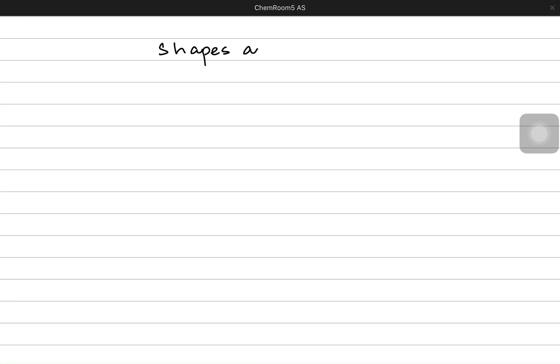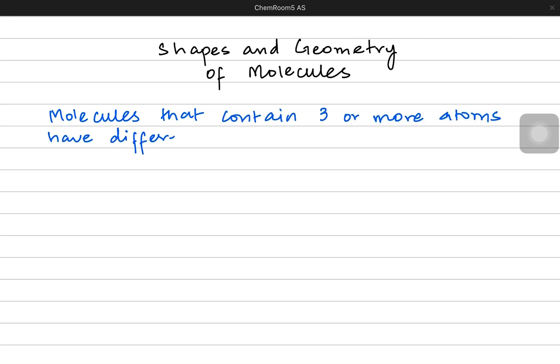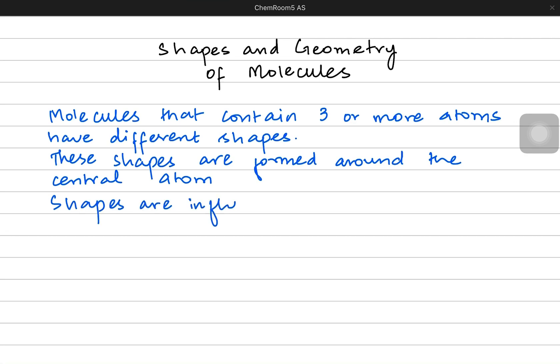Now let's move to another topic of AS level chemistry within the same chapter, that is the shapes and geometry of molecules. We're going to be talking about simple covalent molecules and see how their shapes and geometry look like. The first point is that molecules that contain three or more atoms have different specific shapes. The second point is that these shapes are formed around the central atom. The central atom is the one which makes the most number of covalent bonds within the molecule. It is mostly an element of group 4 or group 5.